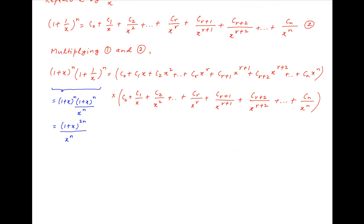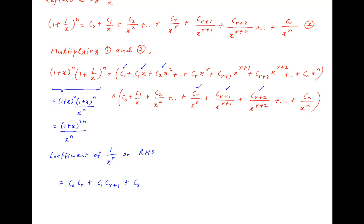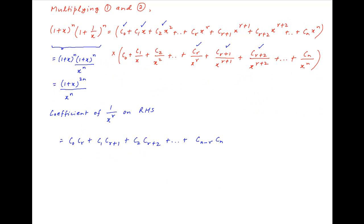The coefficient of 1/x^r on the right-hand side can be obtained by multiplying the constant term in the first bracket with the coefficient of 1/x^r in the second bracket, giving C0·Cr, plus the product of the coefficient of x in the first bracket with the coefficient of 1/x^(r+1) in the second bracket, giving C1·C(r+1), plus and so on, and the last term is C(n−r)·Cn.